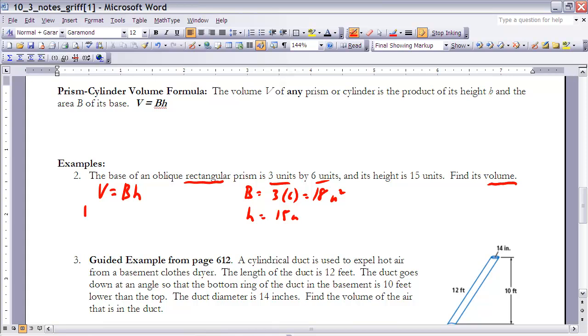Therefore, the volume is going to be equal to 18 times 15. So on my calculator, I can multiply 18 times 15, which would be 270. And now we had units squared times units, so we're going to have a volume in units cubed. So that would be the answer for example 2.